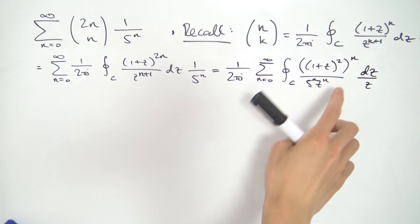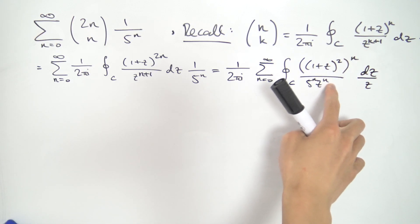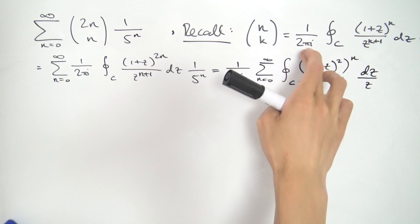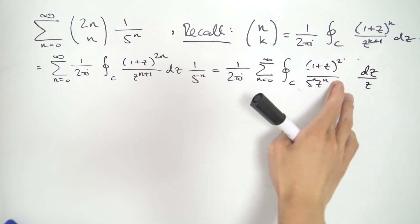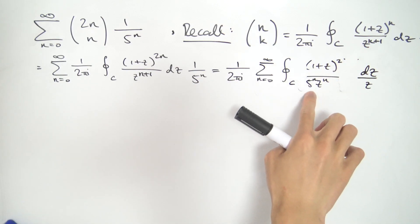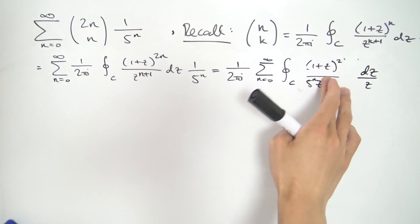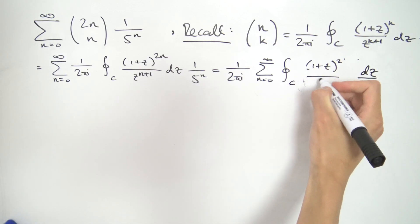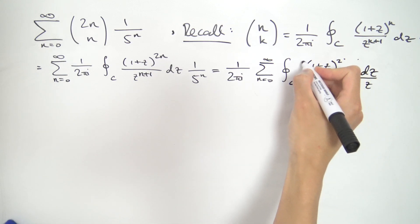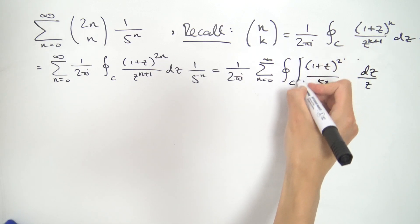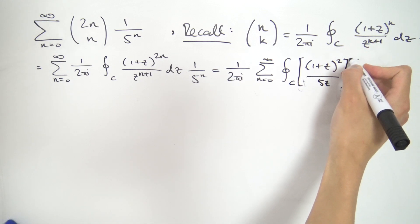The reason I do this is because I want to factor out the power of n. So 5 to the n times z to the n — we can factor out these n powers and we'll get 1 plus z squared over 5z, the whole entire thing raised to the nth power.